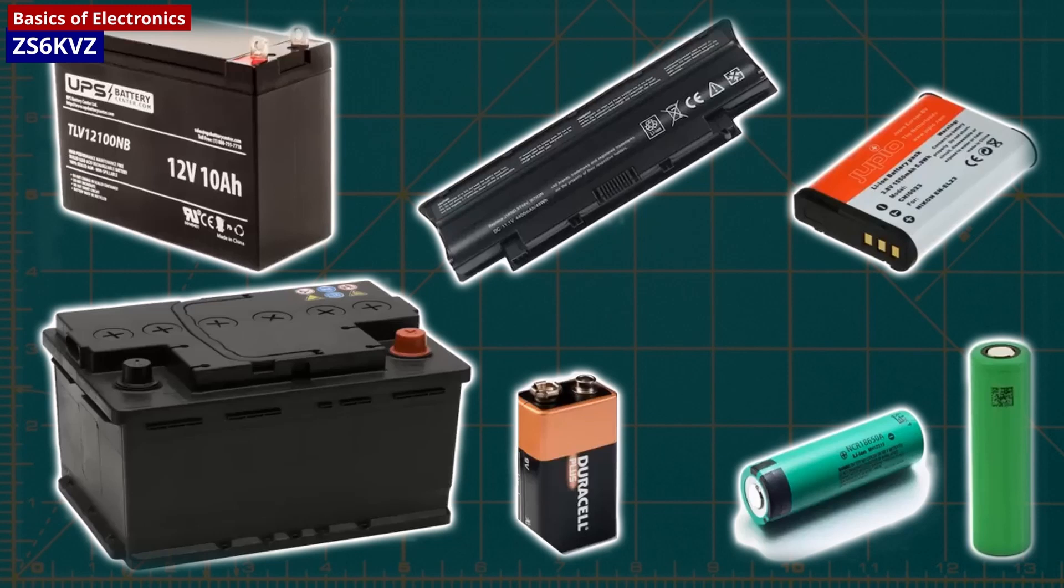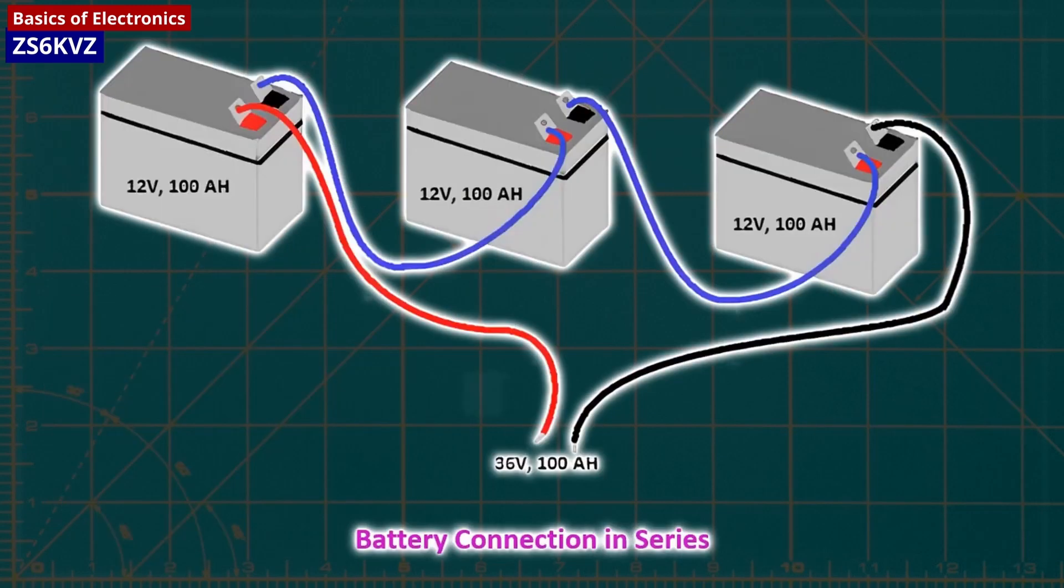A battery is a container that converts chemical energy into electricity. By placing batteries in series, the voltage of each battery is added consecutively, while the current remains the same.